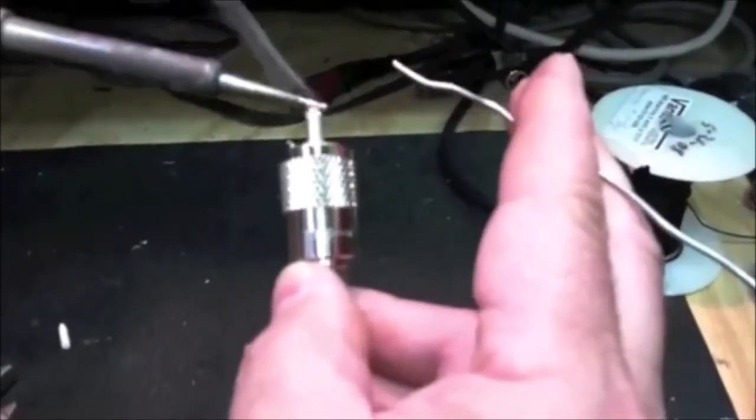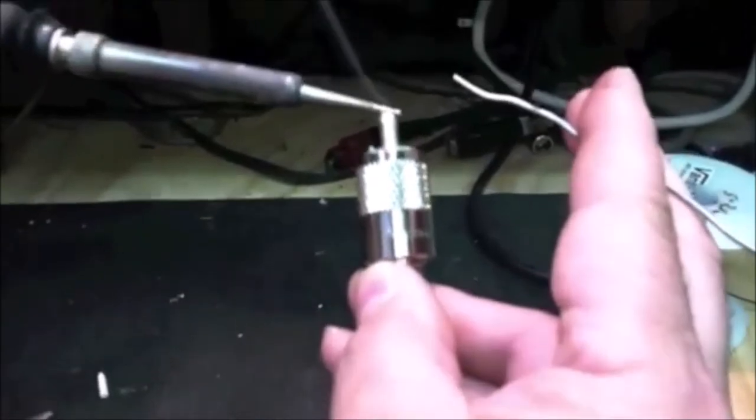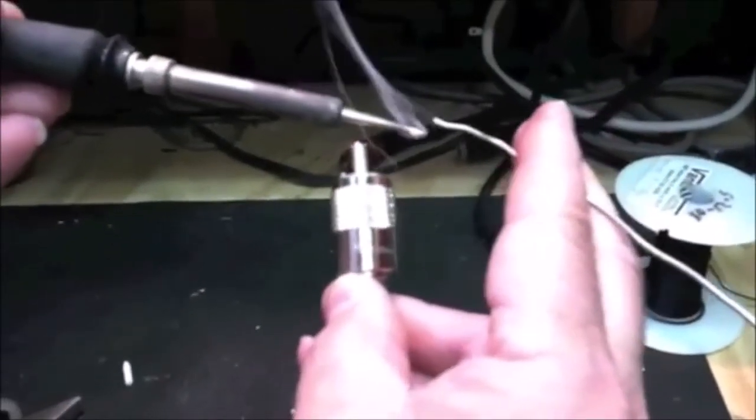I'm soldering at 775 degrees. If you have a temperature adjustment on your soldering gun, set it for this temperature. 775.